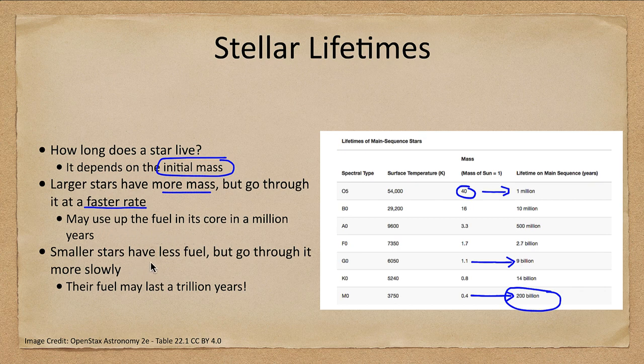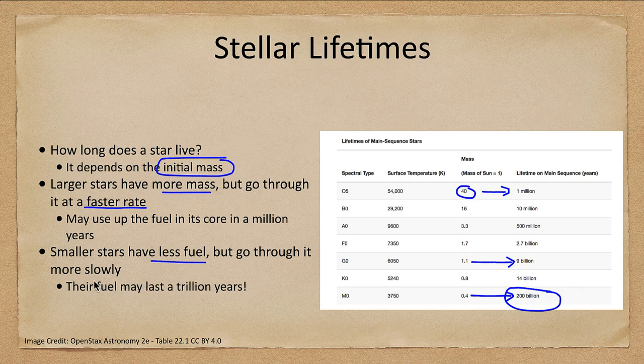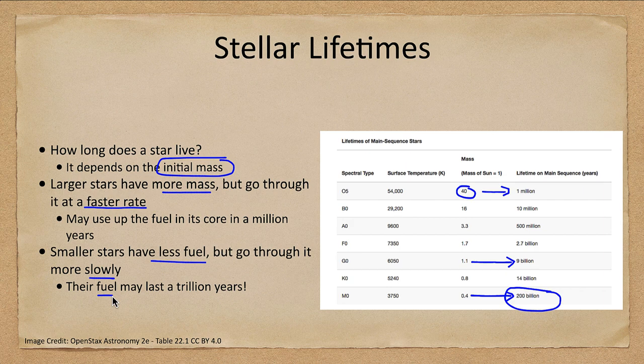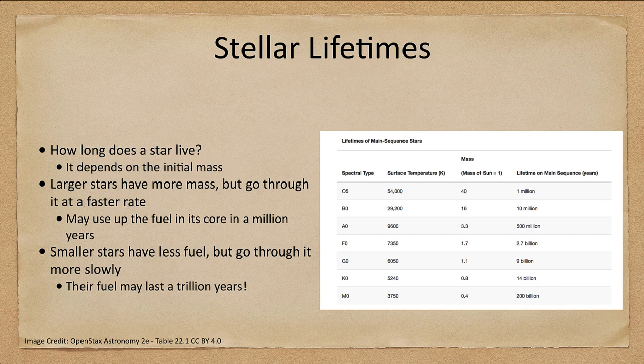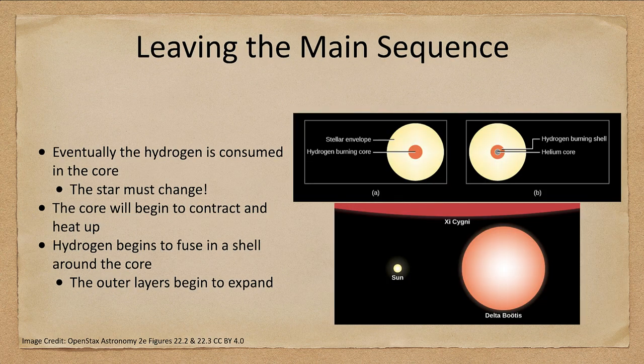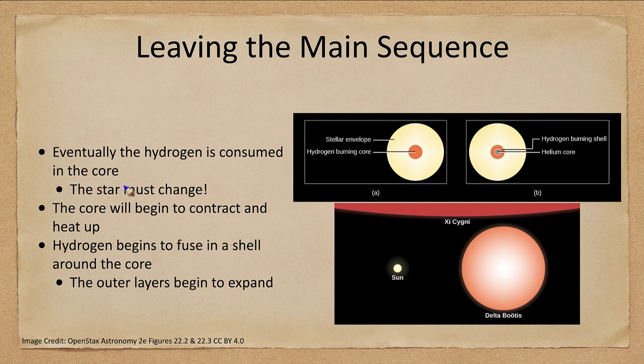So the large stars go through it at a faster rate, using up the fuel so quickly. Small stars have less fuel but go through it more slowly, so this fuel may last a trillion years for those very low mass stars. But eventually, regardless of which star we look at, it will use up that hydrogen in its core. At this point the star must change. It cannot remain the same.